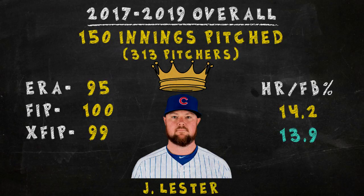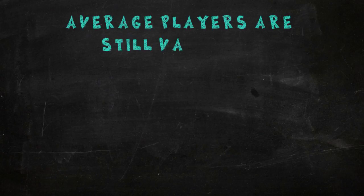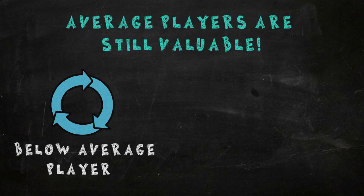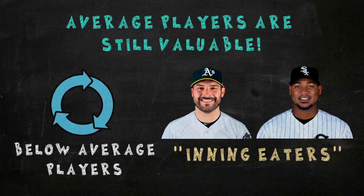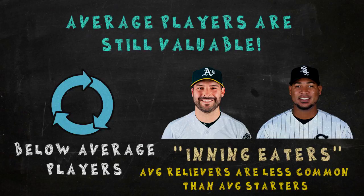Most average is not a bad title. Average players are still very valuable, especially average pitchers. Below average players are constantly being replaced by more guys who also end up being below average. But those players who can provide league average production or even slightly below average production will stick around. You see this more often in the starting rotation with the label 'innings eater' being thrown around. With bullpens, you see a lot more turnover in personnel, which is why finding an average reliever with the requisite number of innings was more difficult. Just remember that average players are a good thing to have, because you could always be doing much worse.